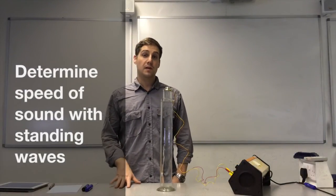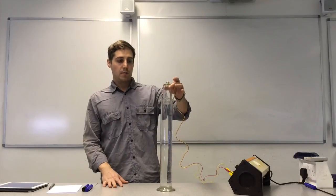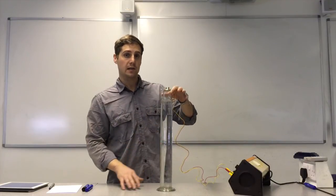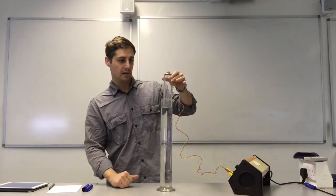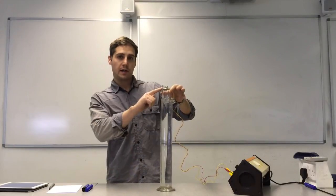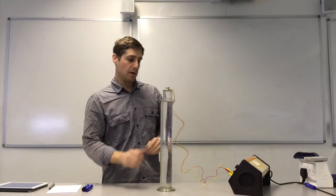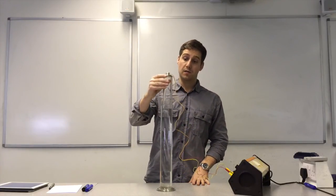This is an experiment to determine the speed of sound using standing waves. I've got a tube here which I can adjust the length of because the cylinder that it's in has water, so that will give me a movable end, a closed end to this pipe. At the other end is a speaker and that will form an open end to the pipe. So I have an open end and a closed end and I can adjust the length of my pipe here.